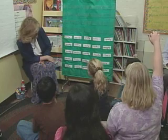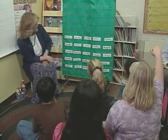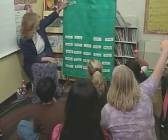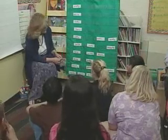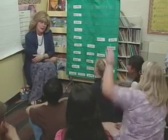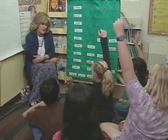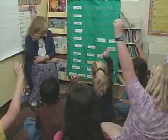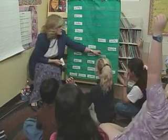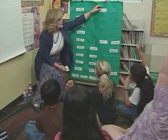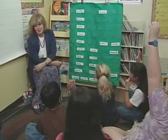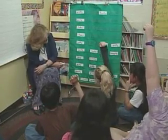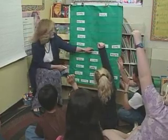Ms. Barron asks students to identify words ending only with Y. Robert offers pretty, which she writes up. She then asks for a word ending with LY. Taylin says lonely, which becomes the keyword for that column. Robert also offers slowly, and the class locates it on the chart.